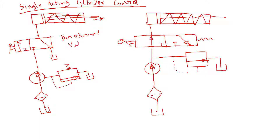It's a directional valve and it has two envelopes — one on the left and one on the right. When in this situation, this pump — this is a pump, this is a strainer, and this is a reservoir.